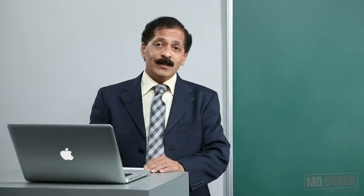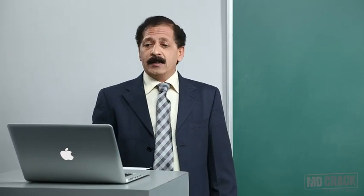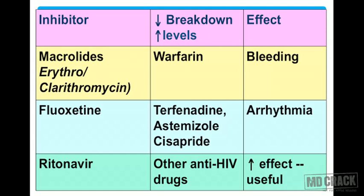Let's look at examples of enzyme inhibition in actual drug interactions. Macrolide antibiotics like erythromycin and clarithromycin are likely to inhibit the metabolism of warfarin, which is an oral anticoagulant, so its level will increase in the blood and this can lead to bleeding.